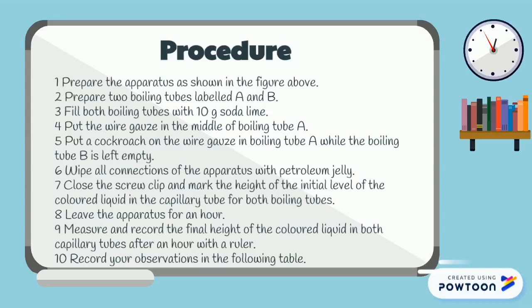Seventh, close the screw clip and mark the height of the initial level of the colored liquid in the capillary tube for both boiling tubes. Eighth, leave the apparatus for an hour. Ninth, measure and record the final height of the colored liquid in both capillary tubes after an hour with a ruler. Lastly, record your observations in the following table.